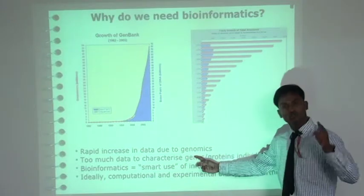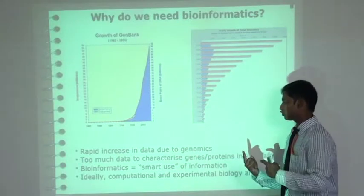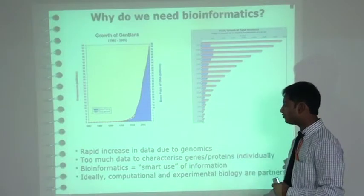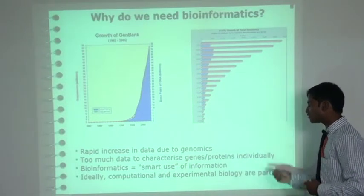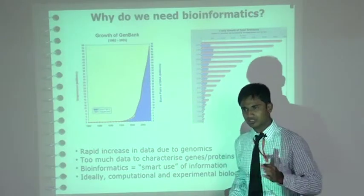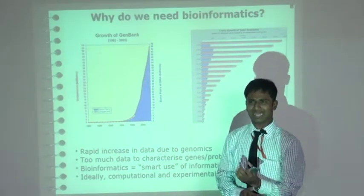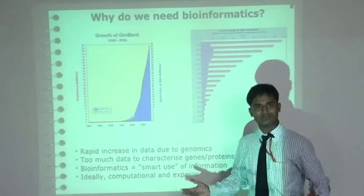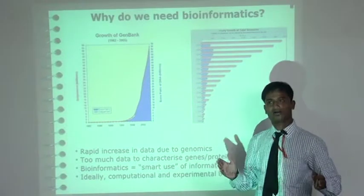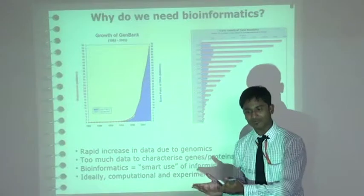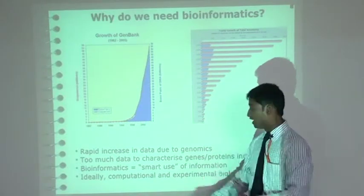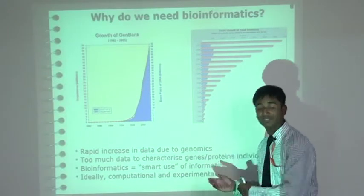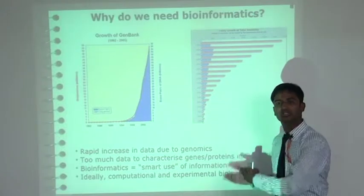There has been a rapid increase in data due to genomics, and too much data to characterize genes or proteins individually. Bioinformatics equals the smart use of information. Just as the shift has moved from 'do hard work' to 'do smart work,' bioinformatics provides smart use of this field — that's why it is the most important field in biotechnology. Computational and experimental biology are partners.